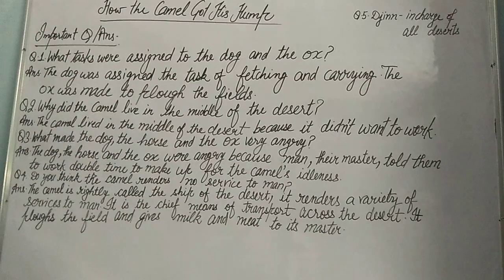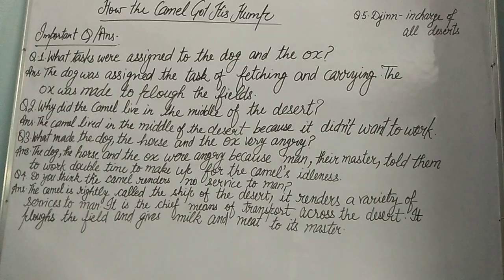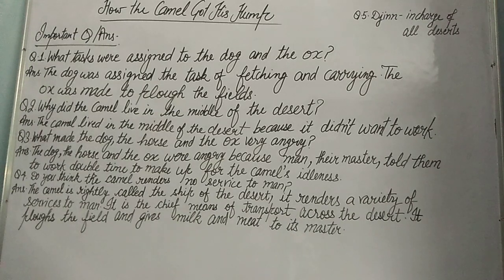Unhe gussa isliye aa raha tha, because their master — unka malik — told them to walk double time to make up for the camel's idleness. Idleness matlab khali baithkar aalas. Camel aalsi tha, kuch bhi nahi karta tha. Usne in tino ko koi help karne se manah kar diya tha, jiske karan dog, horse aur ox ka time waste hua. Uski bharpaai karne ke liye unhe double time kaam karna padega.